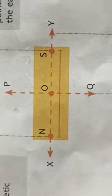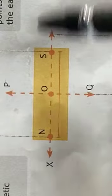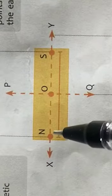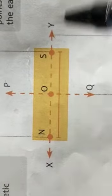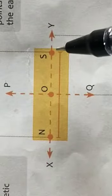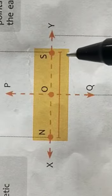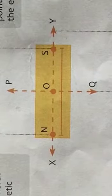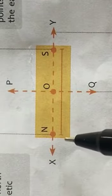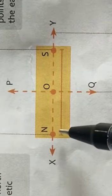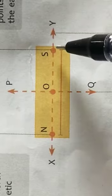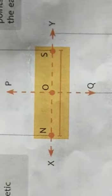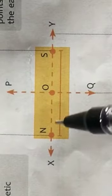The end of the magnet — if this is the magnet, the end here is the north pole and here it is the south pole. If we take a freely suspended magnet, the end that points toward the geographic north is the north-seeking pole or simply the north pole, and the end that points toward the geographic south is the south-seeking pole or the south pole.